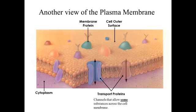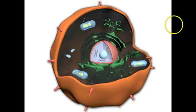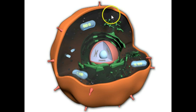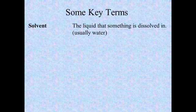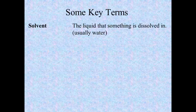Transport proteins are channels that allow some things to move across, but not others. Zooming back out, you can imagine this huge layer of molecules — from the molecular standpoint, a very large layer forming a hollow sphere that we know as the cell. Now, some terminology. Anytime we talk about a solvent, a solvent is a liquid. In biology, the one solvent we are almost always talking about is water. In chemistry you talk about lots of other solvents, but in biology things are almost always dissolved in water.